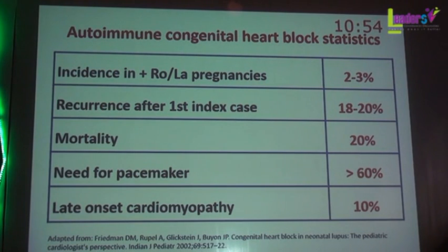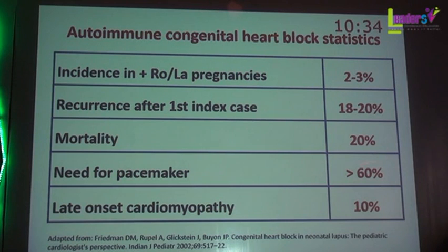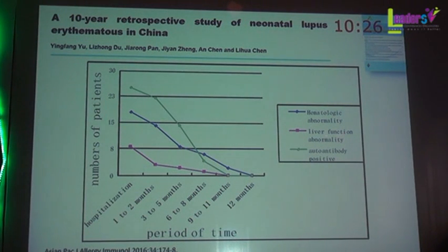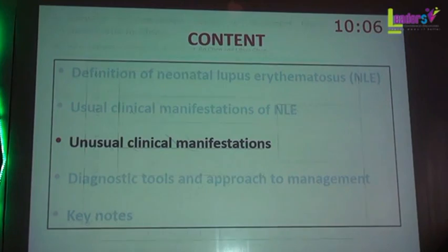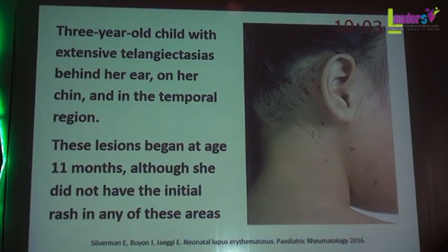Regarding statistics: incidence in a mother with positive Ro antibodies is 2–3%. Recurrence after the first index case is up to 20%, so you must anticipate it in subsequent pregnancies. Mortality is 20%, and more than 60% of infants will need a pacemaker. Late-onset cardiomyopathy occurs in 10% of cases. The autoantibodies resolve on their own — by 12 months, anti-Ro and anti-La antibodies will disappear from the infant's blood, and hematologic and liver abnormalities will also resolve.